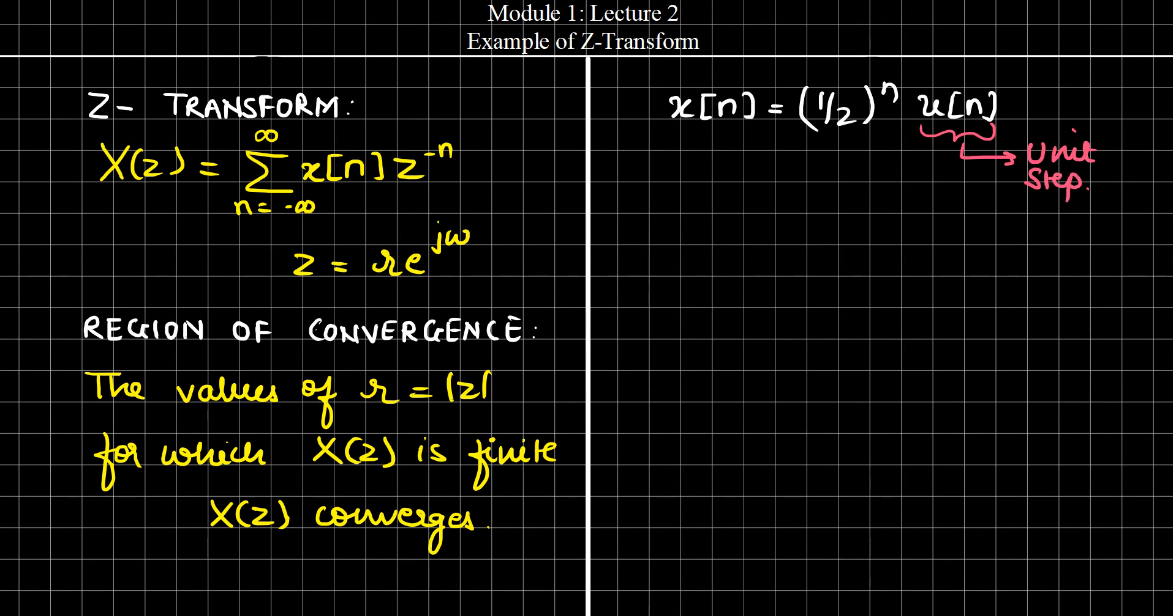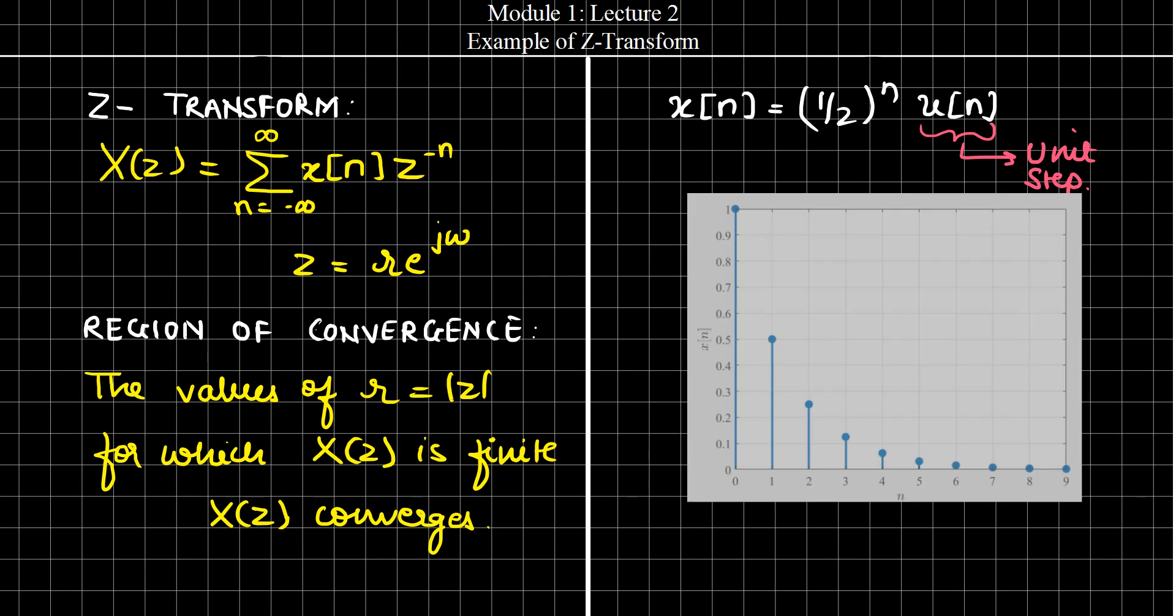If we try visualizing this signal graphically, it looks something like this. We can see that it is a decreasing function. By decreasing what I mean is as my n approaches infinity, the value of X(n) also tends to zero or rather it is equal to zero. We can also observe that the value of X(n) for n less than zero is equal to zero.